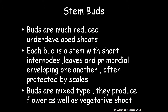Stem buds are much reduced, underdeveloped shoots. Each bud is a stem with a short internode and leaf primordia enveloping one another, often protected by scales. So they can be protected by scales or they can be naked buds.